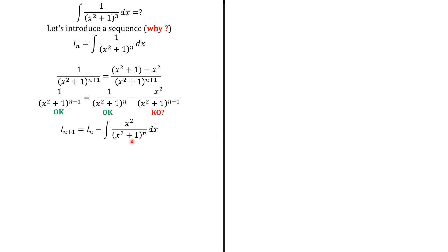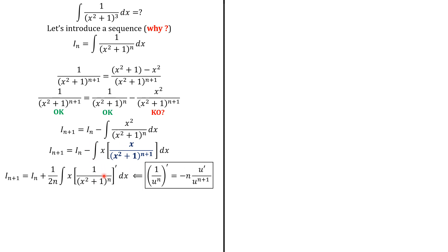We know that the derivative of x² + 1 is 2x. So if we can just isolate x in the numerator and keep x on the other side, this could be useful. We separate like this, and recognize that 2x is the derivative of x² + 1. Using the formula for u = x² + 1, when we differentiate (x² + 1)^{−n} we get a factor of 2n, so we divide by 2n to adjust the constants.